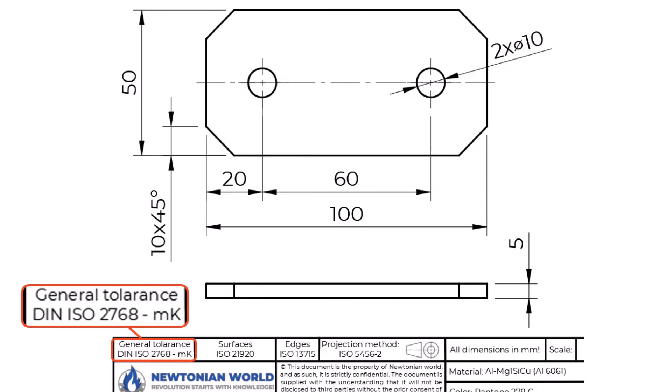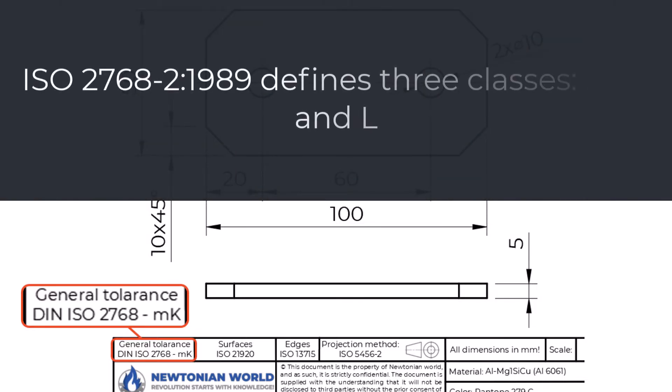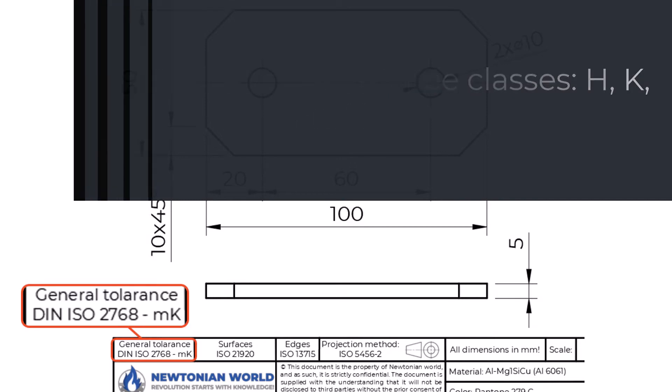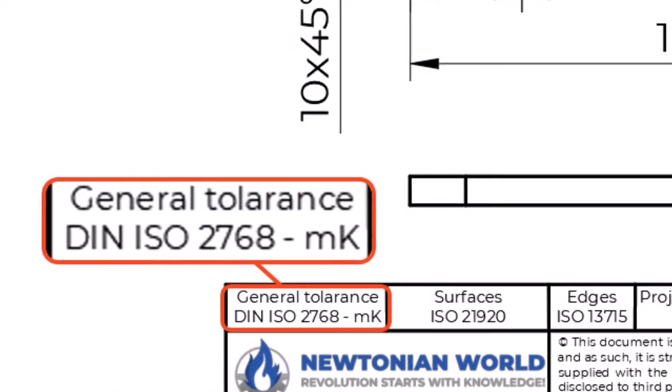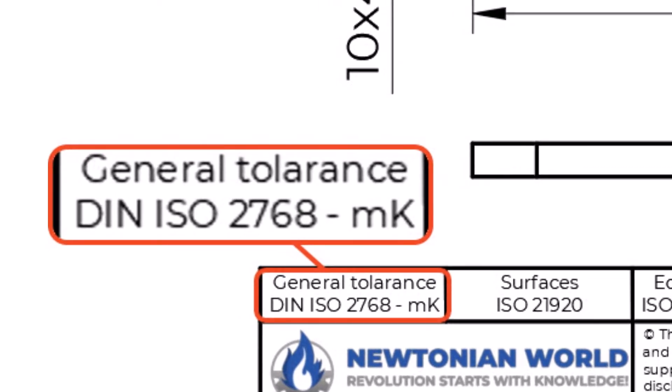We can write general notes on the drawing or refer to the standard in the title block. For form and position, general tolerances were defined by ISO 2768-2:1989. This standard was withdrawn but most engineers are still using it. It defines three classes: H, K, and L. In the drawing title block, for that reason, you can often see remarks such as ISO 2768-MK, ISO 2768-1-2 class medium, and ISO 2768-2 class K.